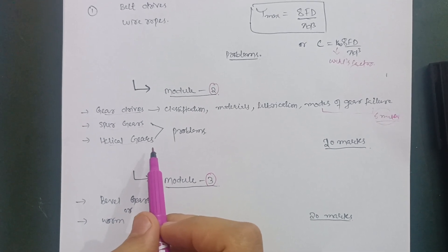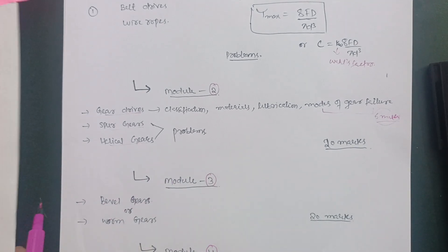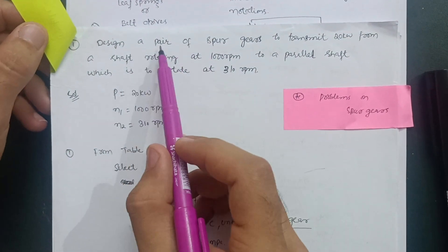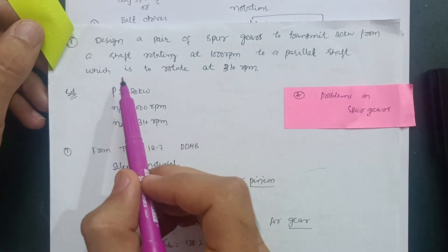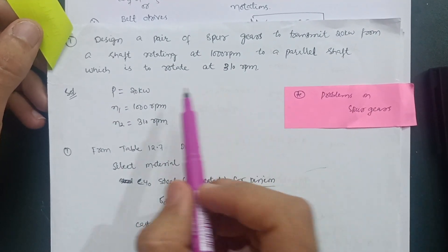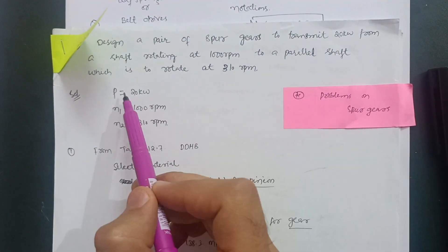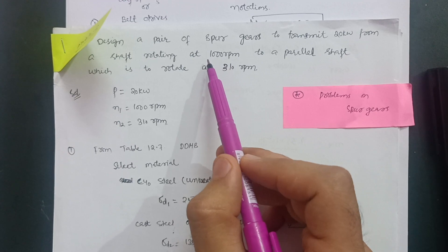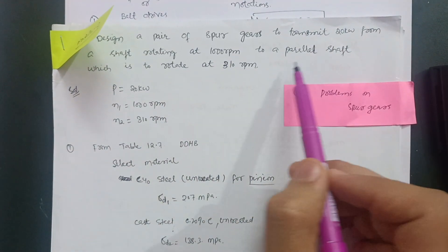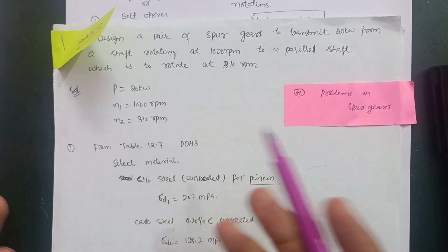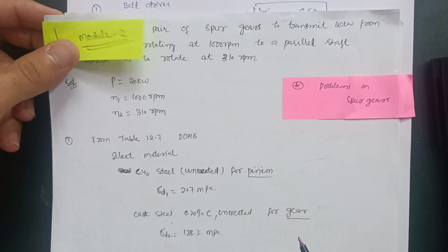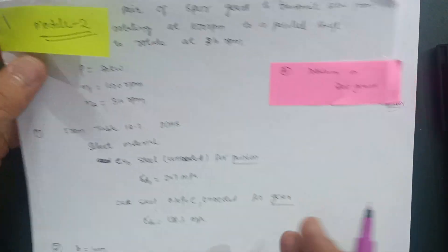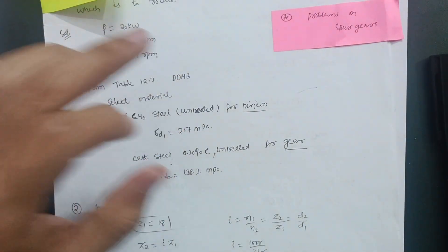Here is the interface of a spur gear problem. The question is: design a pair of spur gears to transmit 20 kilowatt from a shaft rotating at 1000 RPM to a parallel shaft which is to rotate at 310 RPM. First, write the given data — power is 20 kW, N1 is 1000 RPM, N2 is 310 RPM. Then use your data handbook: choose material, assume number of teeth, and proceed accordingly. Helical gear problems follow the same interface.